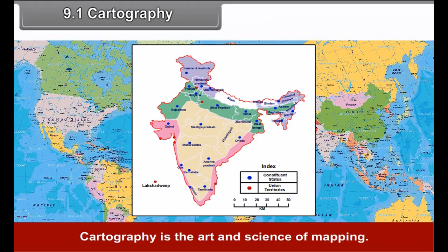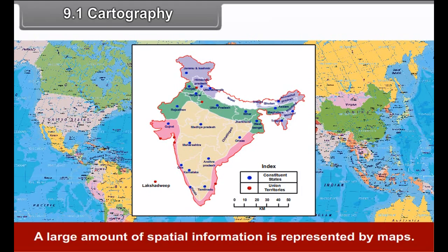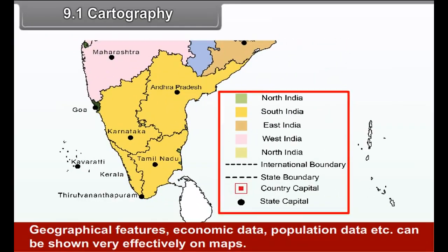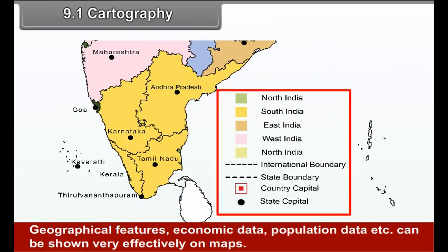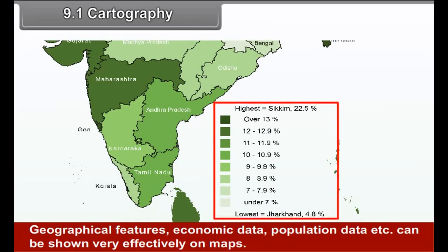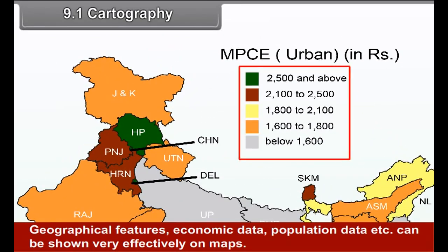Cartography is the art and science of mapping. A large amount of spatial information is represented by maps. Geographical features, economic data, population data, etc. can be shown very effectively on maps.